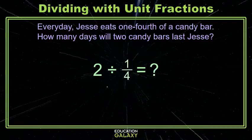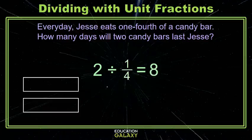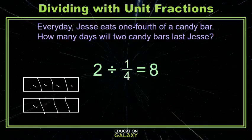Similar to the last two, we can tell this is going to be the product of two and four. If you're unsure about that and you want to double check, you could do a little sketch. Just sketch yourself out a couple candy bars and then cut them into fourths. Now I can see I have one, two, three, four, five, six, seven, eight fourths in these two candy bars.